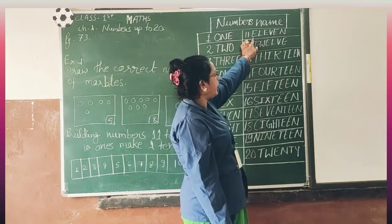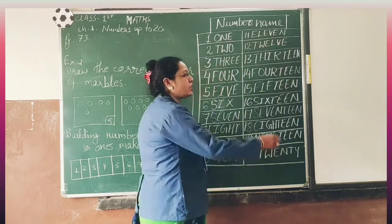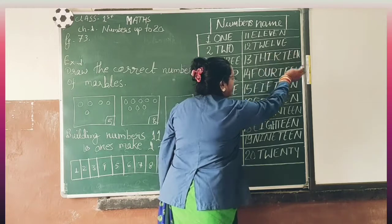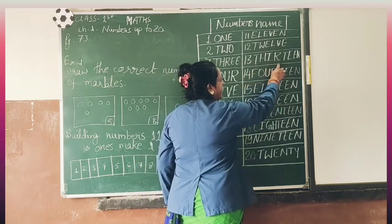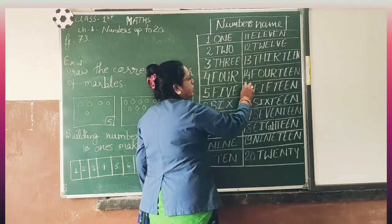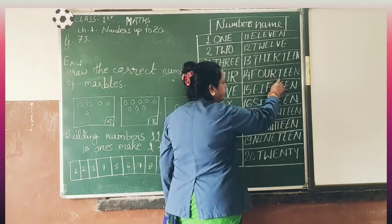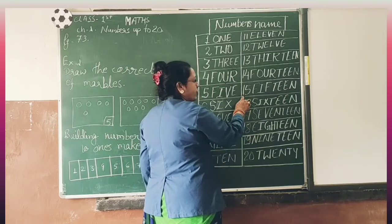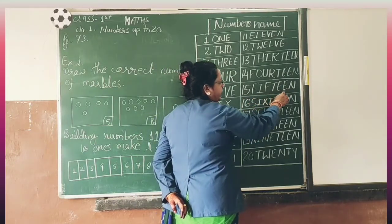11: E, L, E, N — eleven. 12: T, W, E, N, B, E — twelve. 13: T, H, I, R, T, E, N — thirteen. 14: F, O, U, R, T, E, N — fourteen. 15: F, I, F, T, E, N — fifteen.